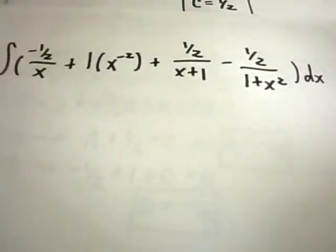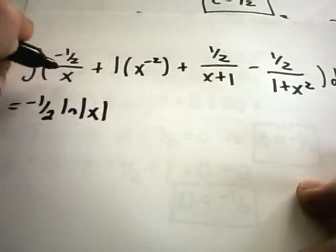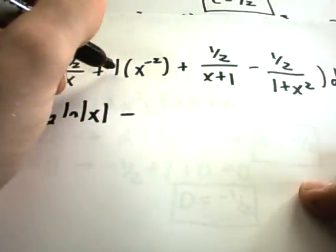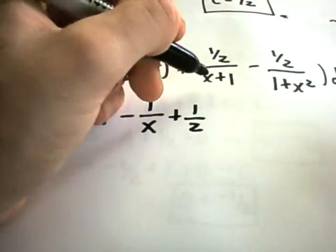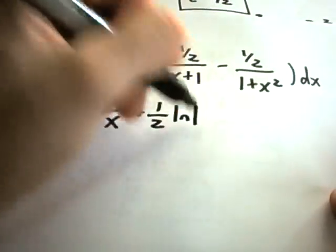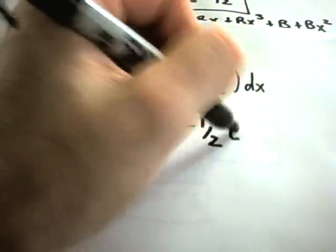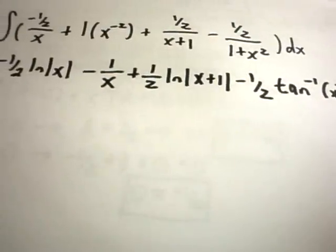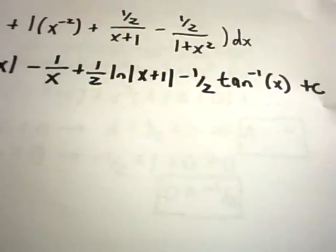Integrating each term: the first term gives negative 1/2 times ln|x|. Integrating x to the negative second gives 1 over x. Then plus 1/2 times ln|x plus 1| from the c term. Finally, the arctangent formula on 1 plus x squared gives negative 1/2 arctangent of x plus C. So the final answer is: negative 1/2 ln|x| minus 1/x plus 1/2 ln|x plus 1| minus 1/2 arctan(x) plus C.